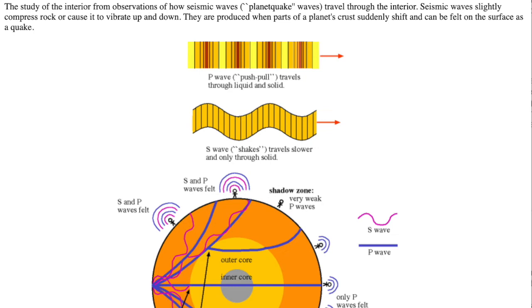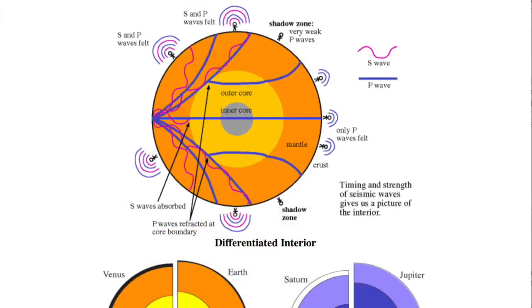S waves are like waves in a jerked rope. Matter moves up and down or side to side. Liquid matter prevents S waves from spreading. Timing of the arrival of seismic waves from at least three stations in a triangular array allows the earthquake center to be located.